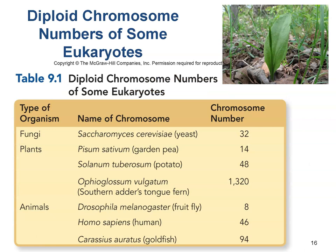Chromosome number does not equal complexity — that can be a little confusing. For example, a potato has 48 chromosomes, two more than us. A goldfish has 94 chromosomes, a lot more than us. Chromosome number does not equal complexity.